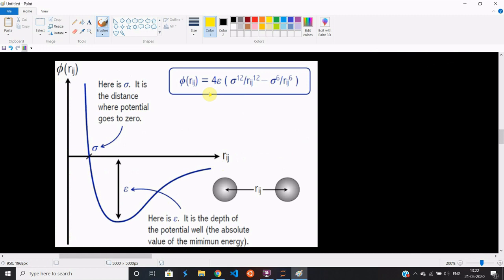Sigma is the distance between the two particles at which the potential energy goes to zero. That's a pretty unique distance of importance, which we define as sigma.